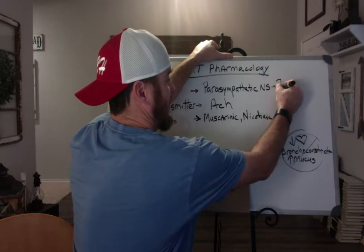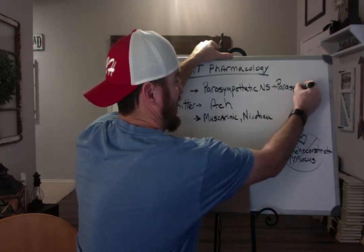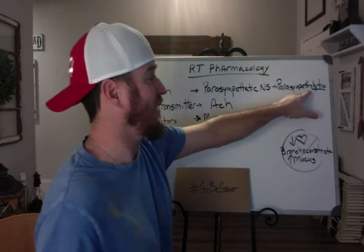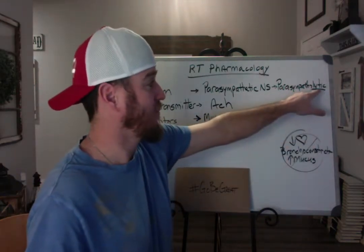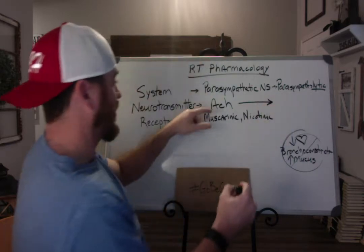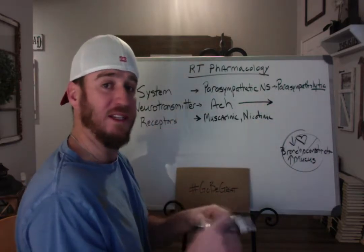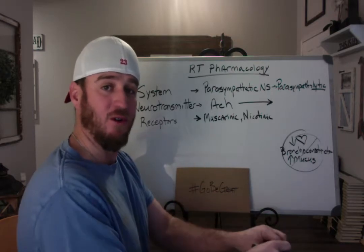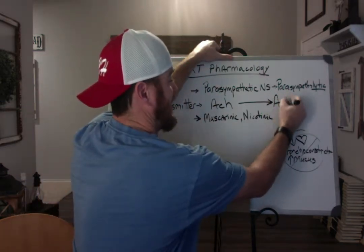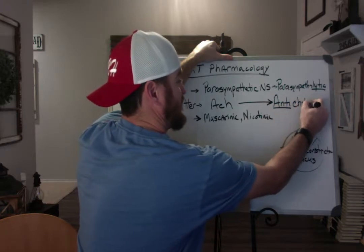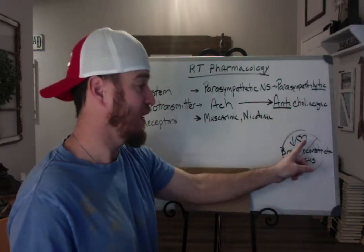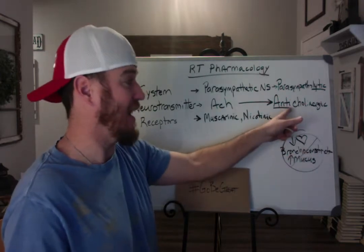We take the word parasymphatho and put lytic on the end of it — parasympatholytic drugs. These are drugs that will block the parasympathetic nervous system and prevent bronchoconstriction and increased mucus from happening. In conjunction with our neurotransmitter acetylcholine, we don't want to give a drug that does the same thing as acetylcholine. We want to give a drug that will work against acetylcholine — an anticholinergic. If you give a cholinergic drug, it will create the unwanted response, so we want to give anticholinergic drugs.